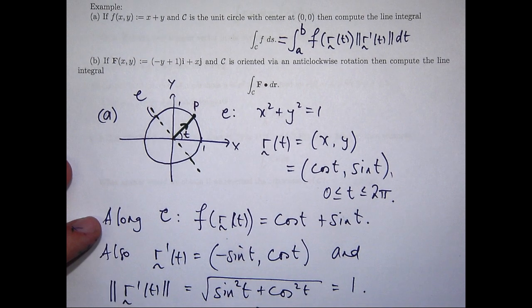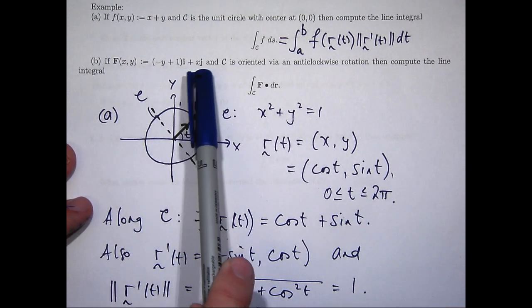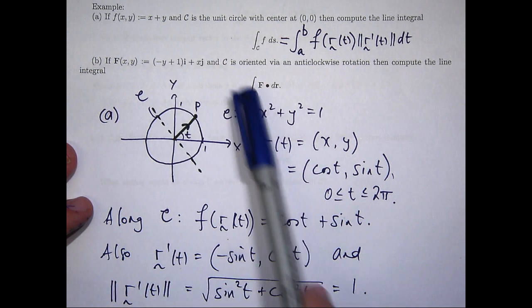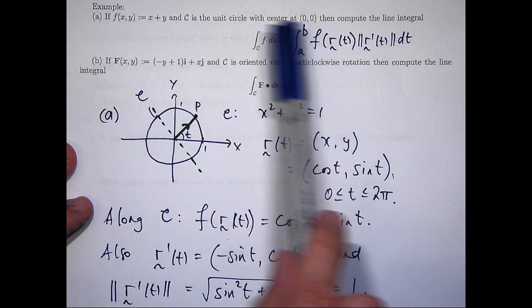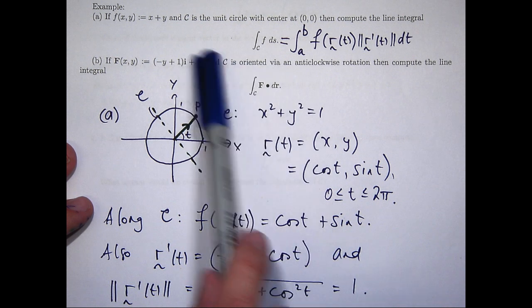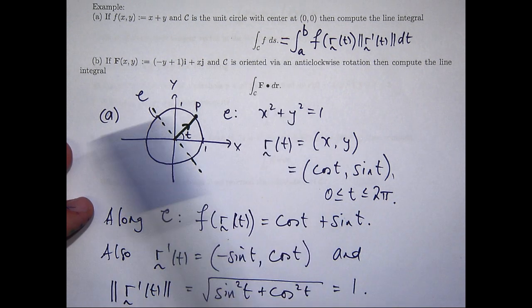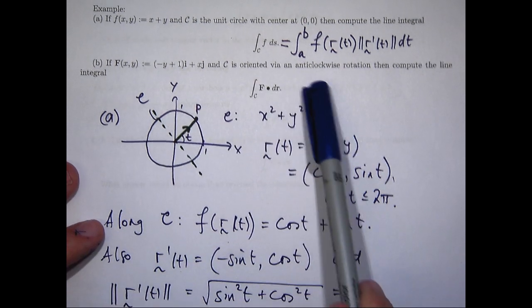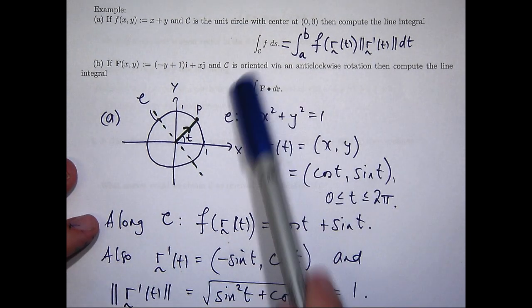Okay. Let's have a look at the second question. Here, we've got a vector field. So, you plug in a value for x and a value for y and you get out a vector. Now, we've got the same curve C as before. It's the unit circle with center at the origin. But, to do line integrals involving vector fields, we really need some sort of orientation on our curve. Now, we're told that the orientation is anti-clockwise.